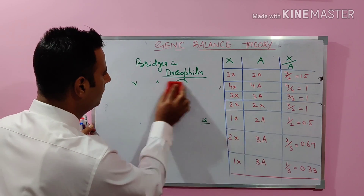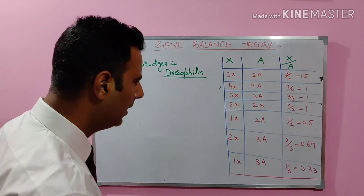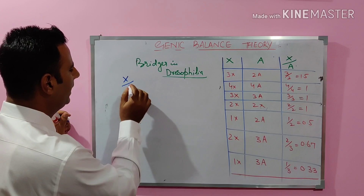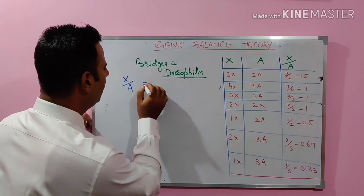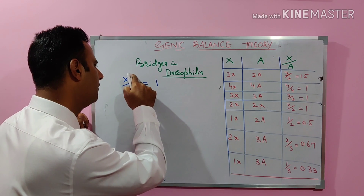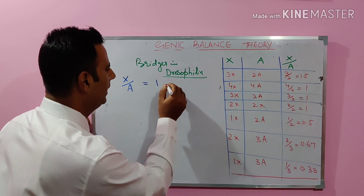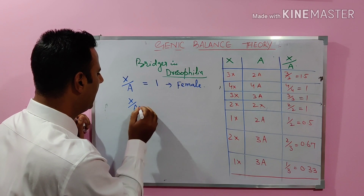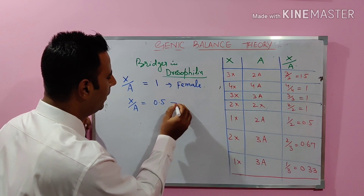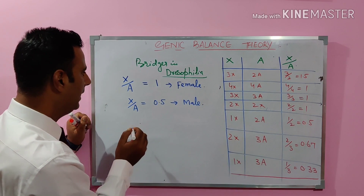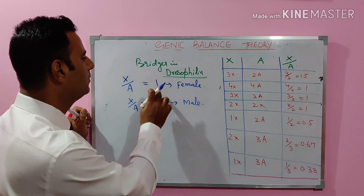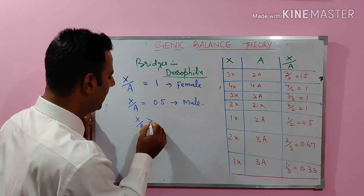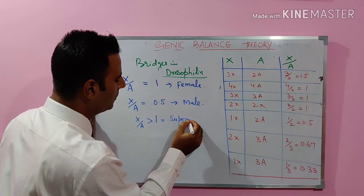Sex is determined by the ratio of X divided by A (autosomes). If X/A equals 1, it is a female. If X/A is 0.5, it is a male. If X/A is greater than 1, it is a super female, because more X chromosomes shift the gene balance further towards femaleness.